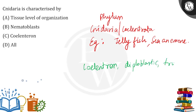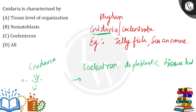They are diploblastic with tissue level of body organization. They have some special features — there is a sting cell present, known as nematoblast, which can also be called nematocyst.